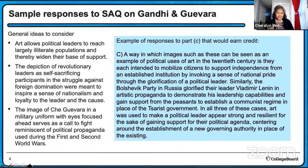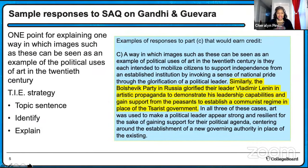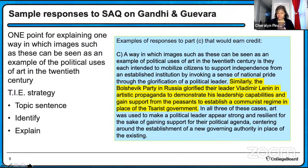I wanted to break this down and introduce a strategy that I teach my students to help them understand the writing of a short answer question. This strategy is called TIE — T-I-E. The T stands for topic sentence, the I stands for identify, and the E stands for explain. That's a simple way to remember what to write as you do your short answer question. I've used this with this particular example from the Google form to illustrate the strategy. At the top, the student has a topic sentence — a way in which these images can be seen as an example of political uses of art in the 20th century.